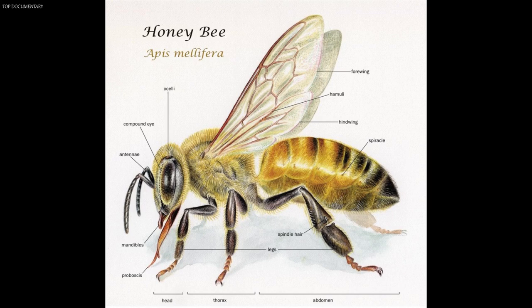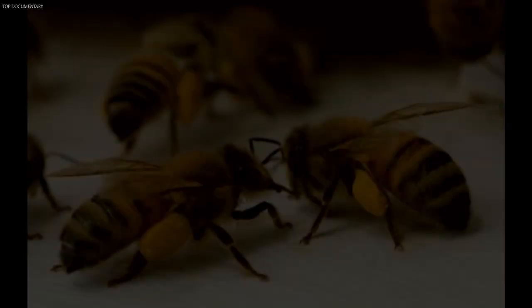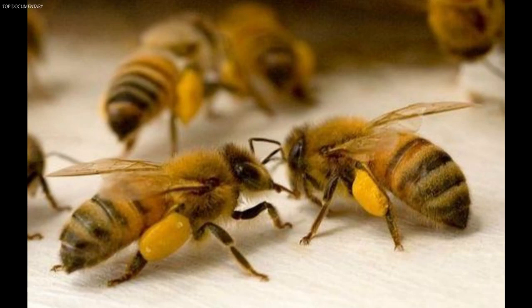A bee has three legs on each side of its thorax. Each leg has five main joints, plus tiny segments that make up the foot. The worker bee uses its legs for walking, for brushing pollen off its body, and for handling wax. It carries pollen and propolis on its hind legs. Each front leg has a notched structure called the antenna cleaner, which the bee uses to clean dirt from its antennae. On the outside of each hind leg of worker bees is a smooth area surrounded by long, curved hairs called the pollen basket, used to carry pollen. When the worker returns to the hive, it places its hind legs down into a cell and kicks off the pollen.